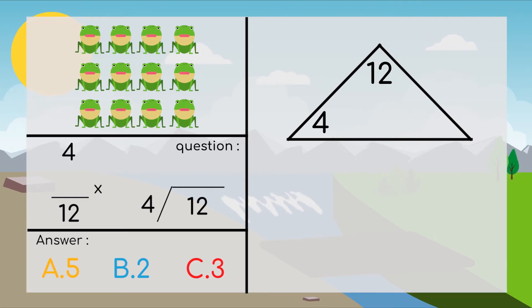For our total number, we have 12, and then 4. So 4 times blank equals 12, and 12 divided by blank equals 4. Let's see what we have in our picture of frogs here.